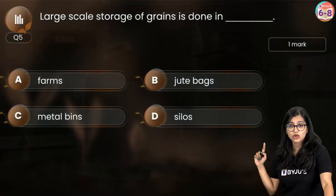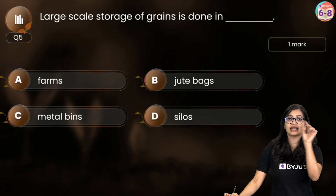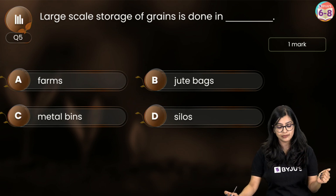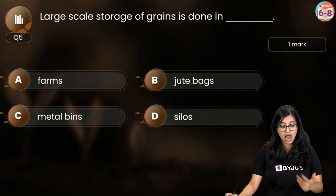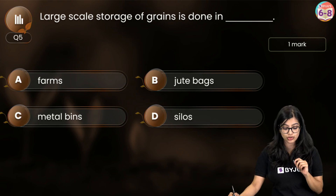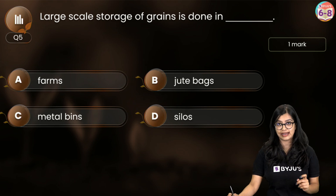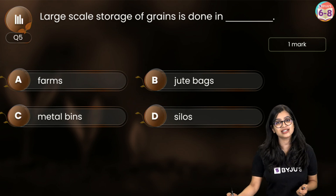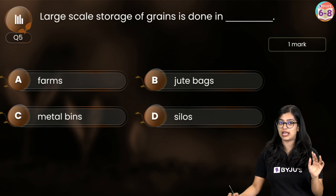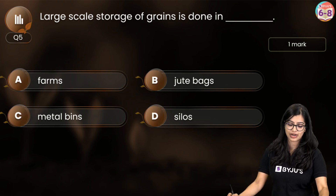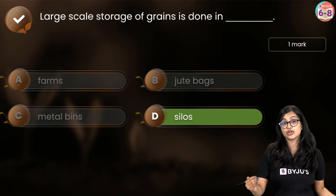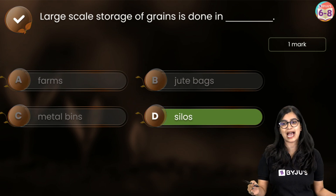Here's a quick question: large-scale storage of grains is done where — in farms, jute bags, metal bins, or silos? Pause the video and try to answer it yourself. The answer is silos and granaries, because large-scale storage of grains is done in silos and granaries.